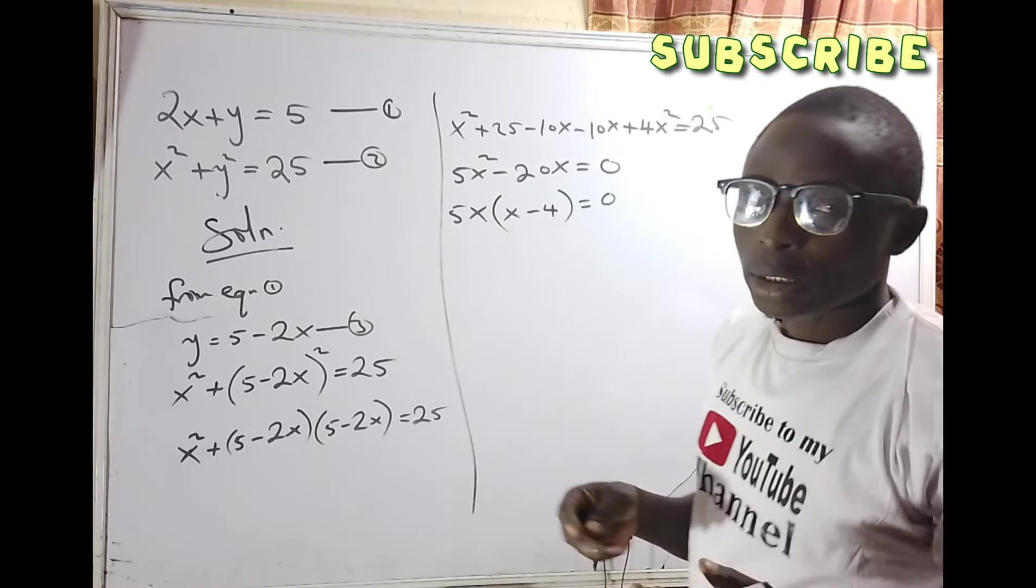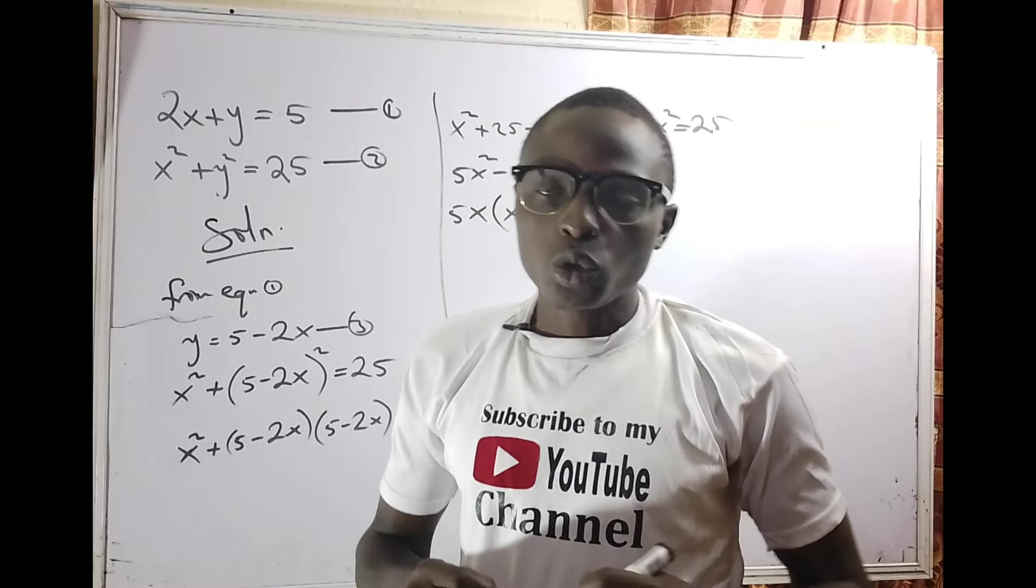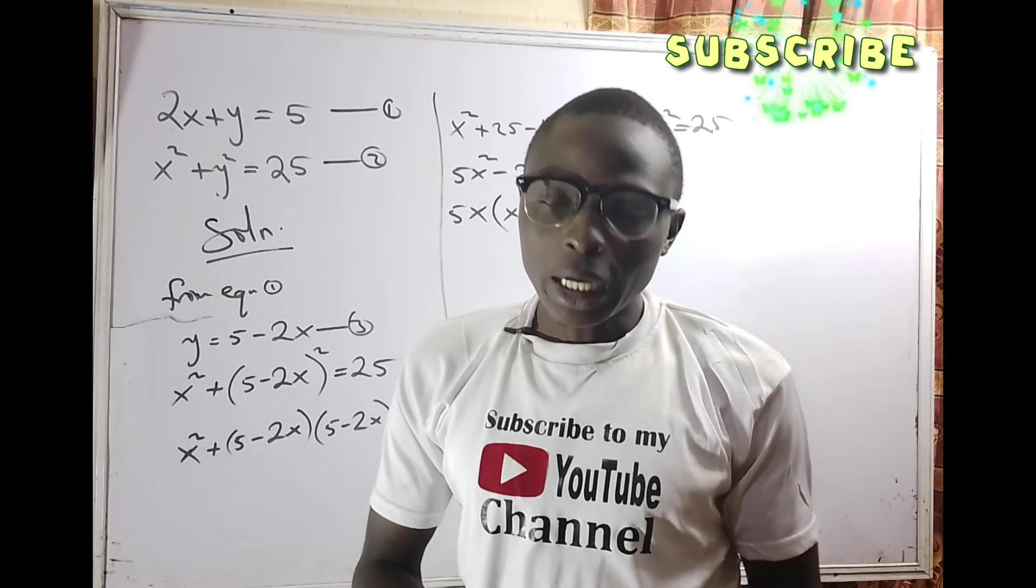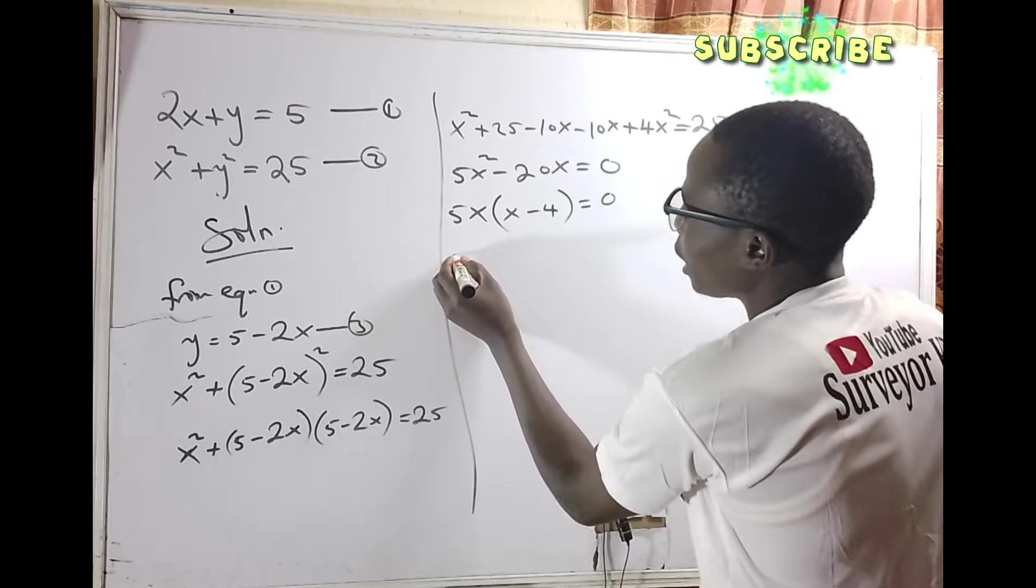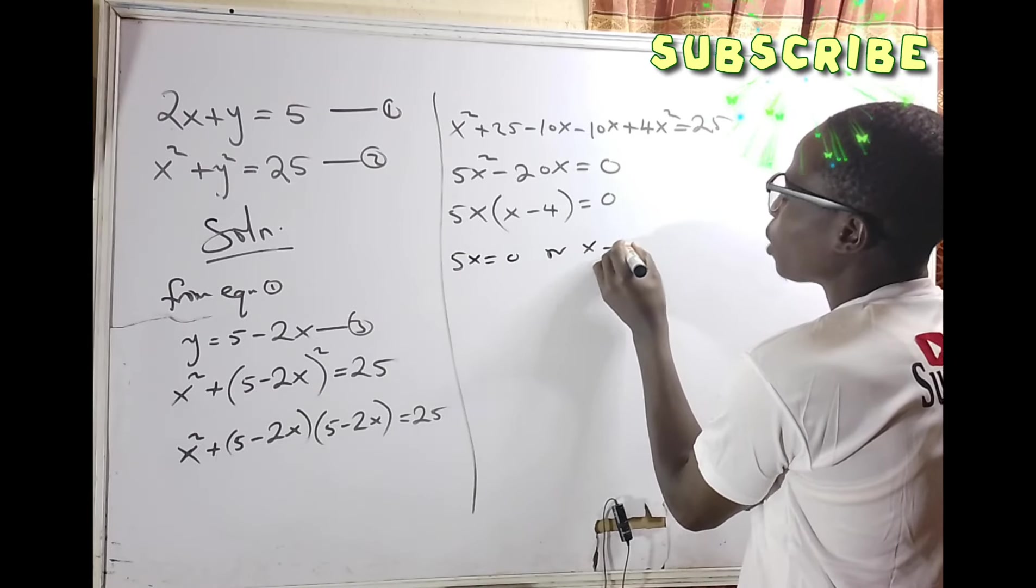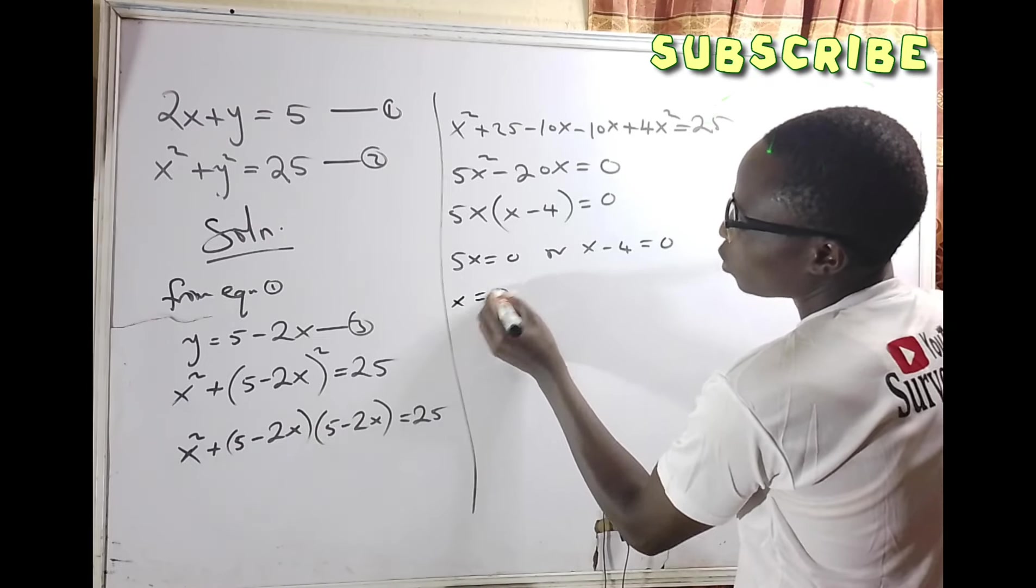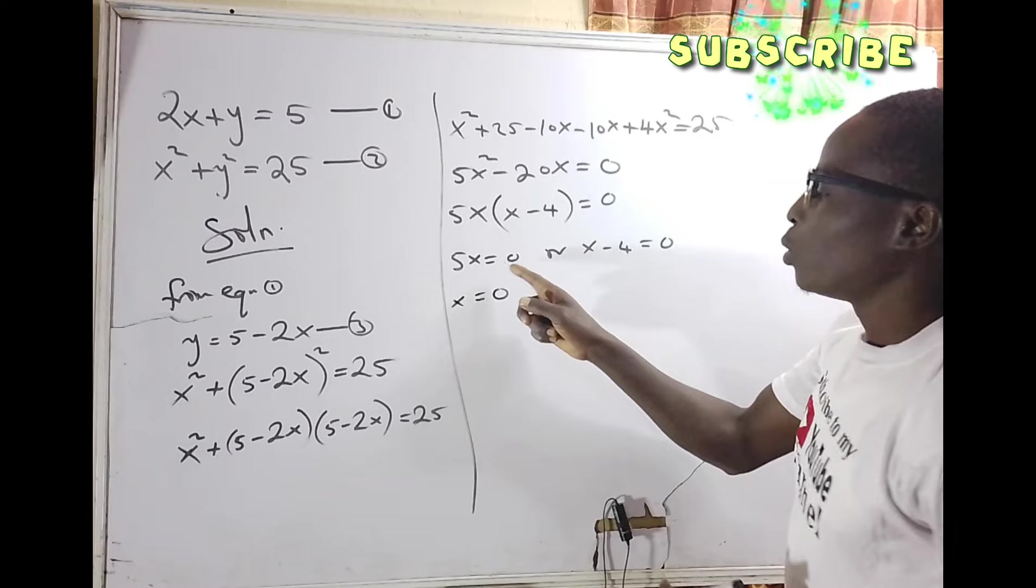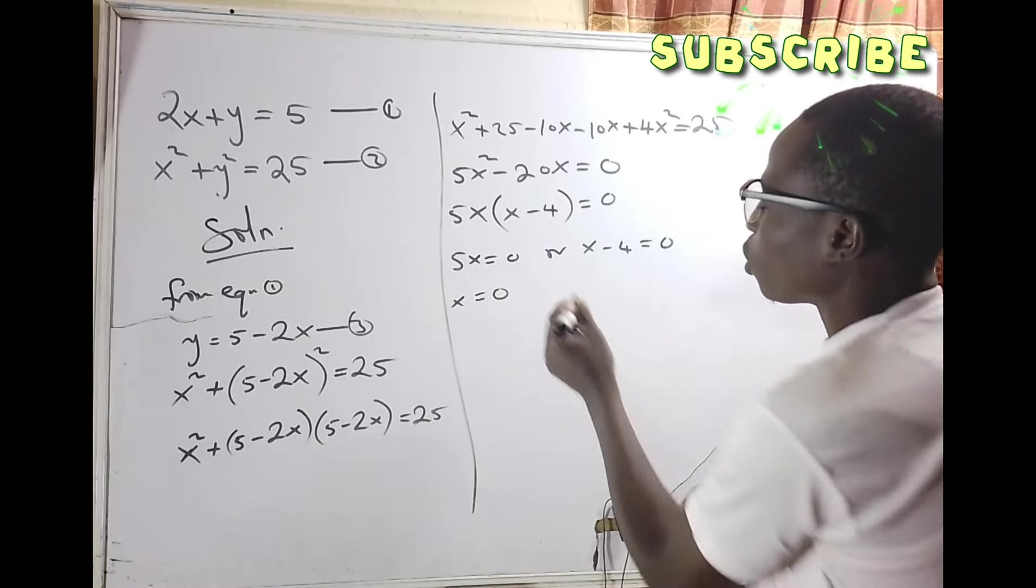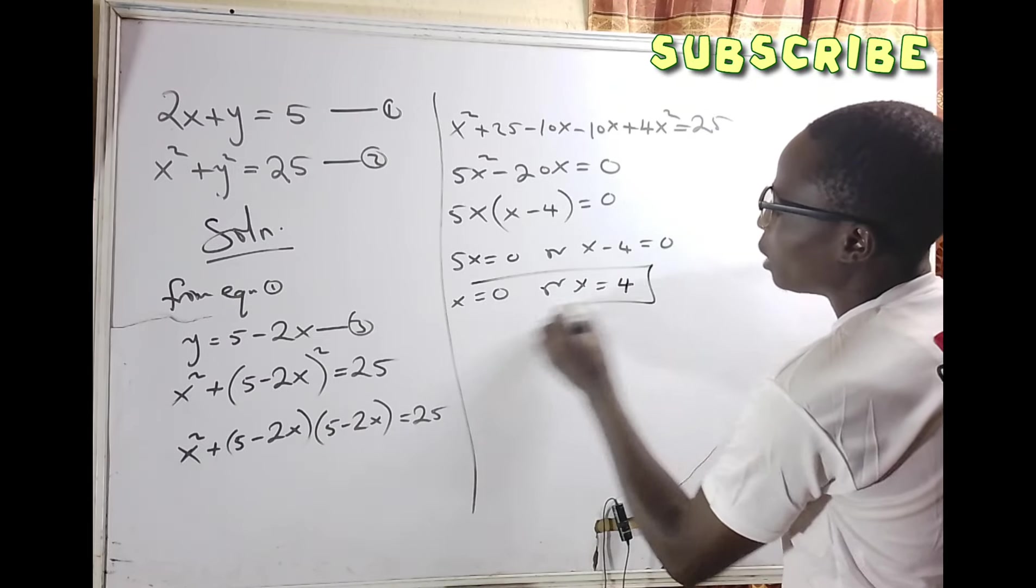We know the product rule that says whenever two numbers or variables are multiplying each other to give zero, one of them must be zero. That means either 5x equals zero or x minus 4 equals zero. So x equals zero or x equals positive 4.